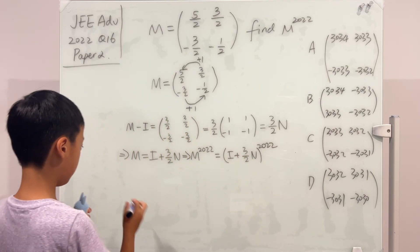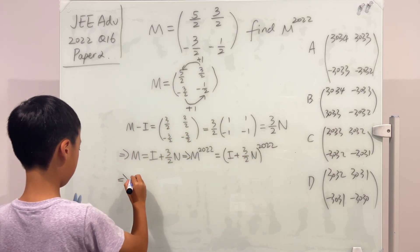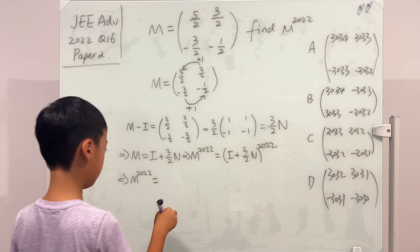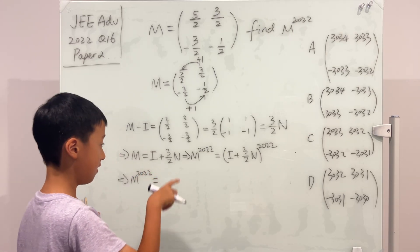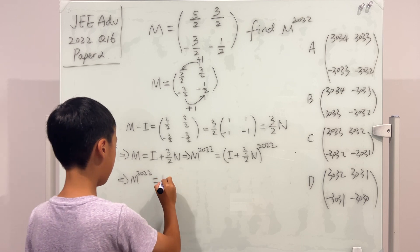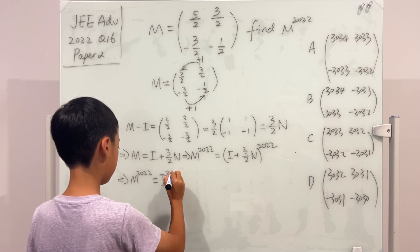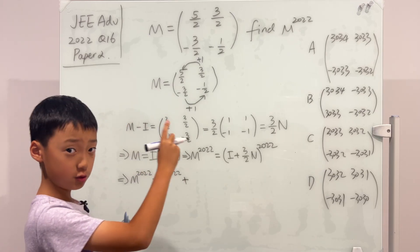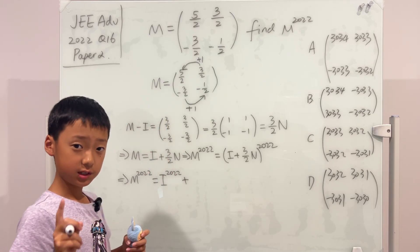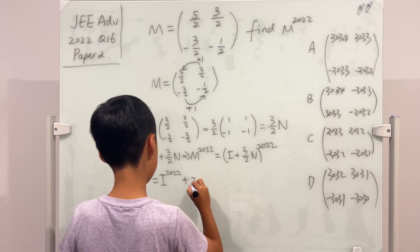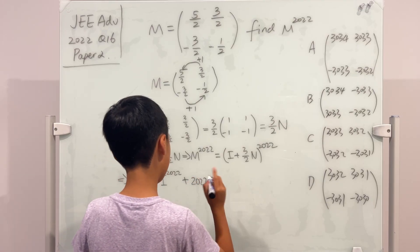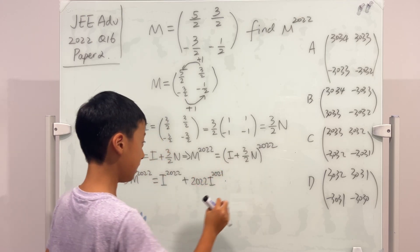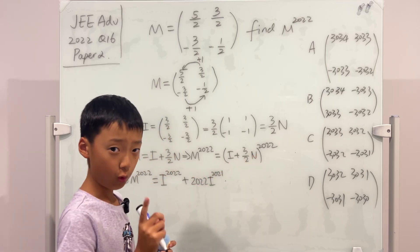So we know that M to the power 2022 is equal to, time for the expansion. For the first term, it is just I to the power 2022, plus C 2022 choose 1, which is simply 2022. And then I raised to the power 2021, and then multiply by this term to the power 1.